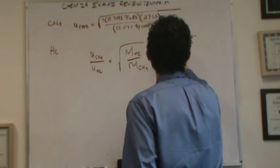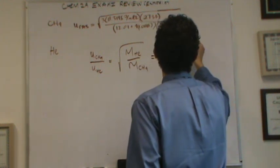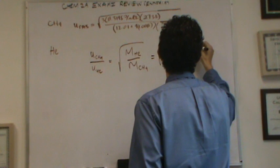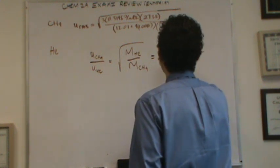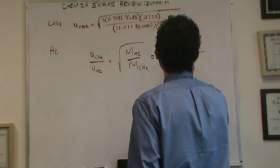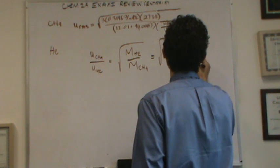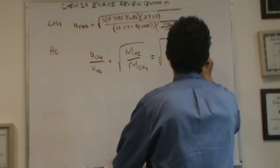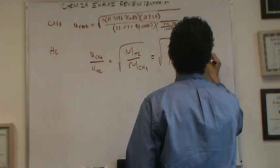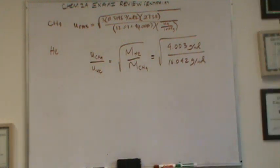So this will be the square root of 4.003 from the periodic table, grams per mole, and 16.042, or something like that, grams per mole for methane. And you calculate that out. Now, here, because it's a ratio, you don't have to put it in SI units. But if you did, it wouldn't hurt you. So if you change those to kilograms, that's totally fine.